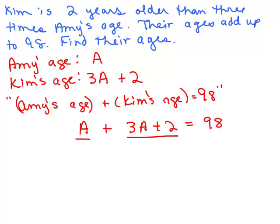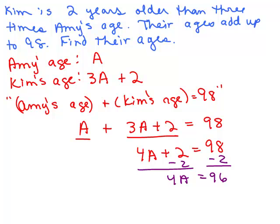All right, so now we could solve this by adding like terms over on the left-hand side. 4A plus 2 is 98, and let's subtract 2 from both sides. So we get 4A is 96, and let's divide both sides by 4. So I think that's 24, A is 24.